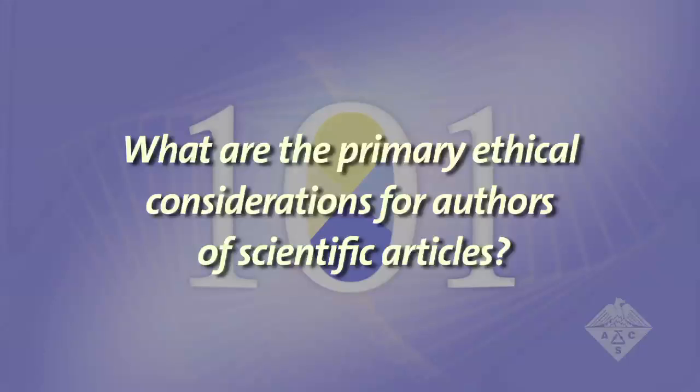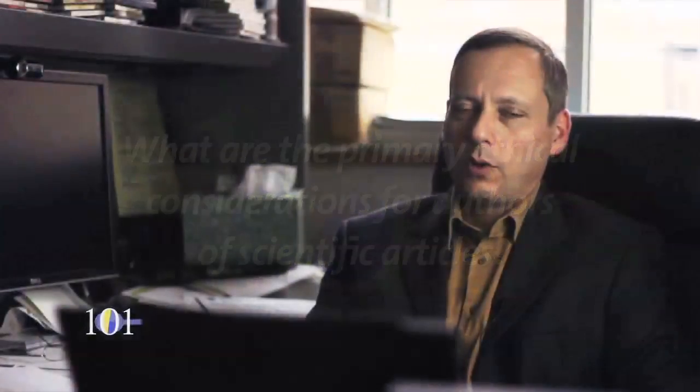What are the primary ethical considerations for authors of scientific articles? It needs to be original research, it shouldn't have been published anywhere else, and it should be your own work. Everybody who made a significant contribution to the work should be an author, and those who made smaller contributions should be acknowledged.